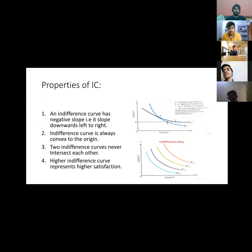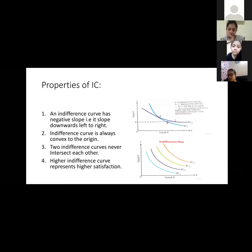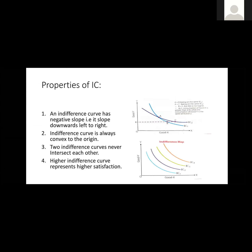An indifference curve has a negative slope, that is, it slopes downward left to right. This is point 1, and it is very simple. It happens because if the consumer decides to have more units of one good, say apple, he will have to reduce the number of units of another good, say banana, so that total satisfaction remains the same.